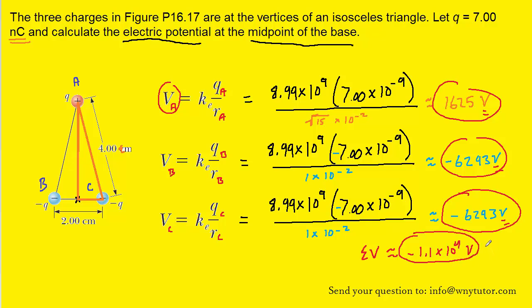If you wanted to convert this into kilovolts, you could use the conversion that one kilovolt is equal to 1,000 volts. That would cancel the volts. And when you computed that, you would get approximately negative 11 kilovolts. So that would be an equivalently correct answer.